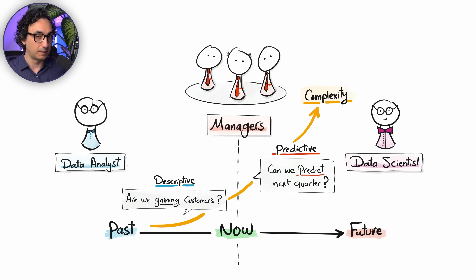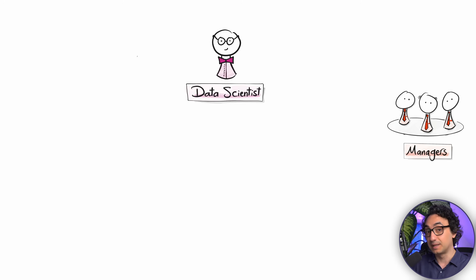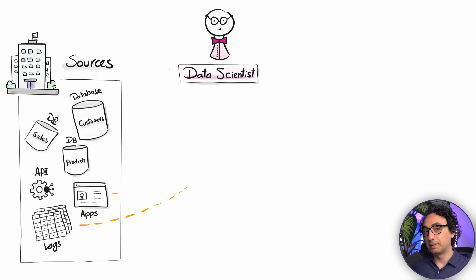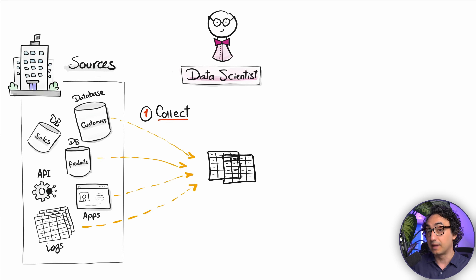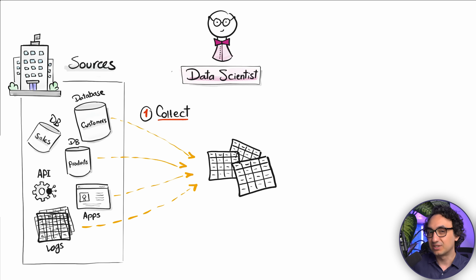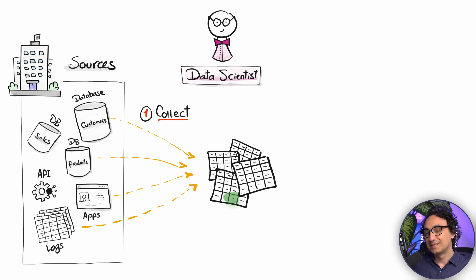For each problem we always need data, so the first step is collecting the data. This time the data scientist needs far more data than the analyst. Anything the company generates about customers can be important — data gets extracted from databases, logs, and spreadsheets. Everything related to the issue is collected in one place.